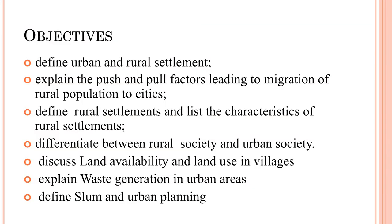Today's objectives of this program are: define urban and rural settlement; explain the push and pull factors leading to migration of rural population to cities; define rural settlement and list the characteristics of rural settlement; differentiate between rural society and urban society; discuss land availability and land use in villages; explain waste generation in urban areas; and define slum and urban planning.